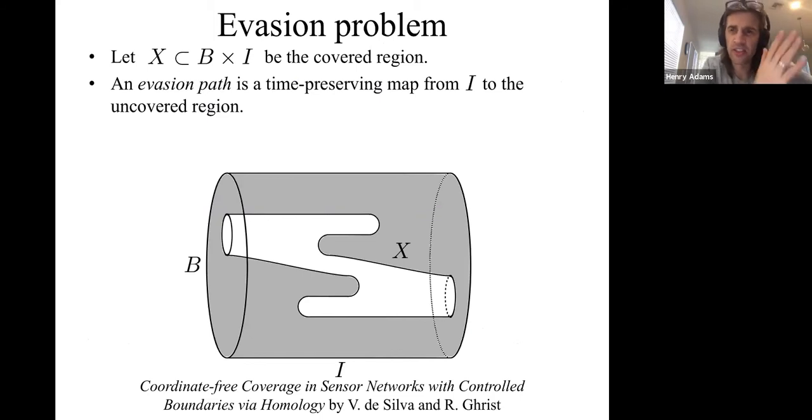I'll be drawing some pictures in space cross time. Space is this disk on the left, and time is varying from left to right. The gray region here is the region covered by the sensors. Over time, that region changes as the sensors move. And the white region is the region that's not covered by the sensors. X is our covered region in space cross time, and its complement is this white region not seen by the sensors.